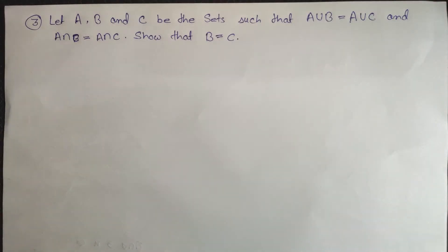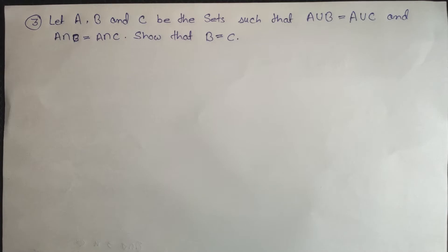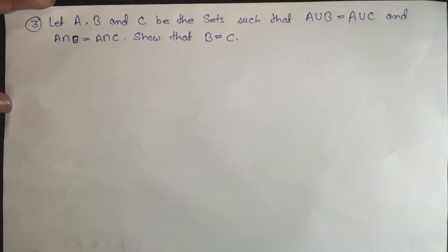Our question is: let A, B, and C be sets such that A union B is equal to A union C, and A intersection B is equal to A intersection C. Show that B is equal to C.